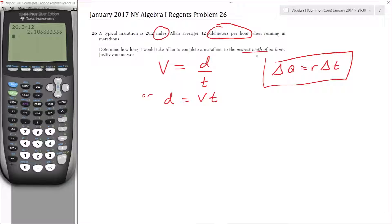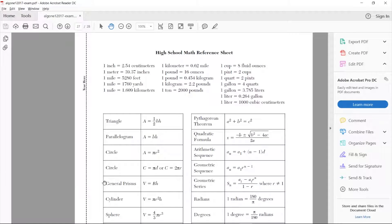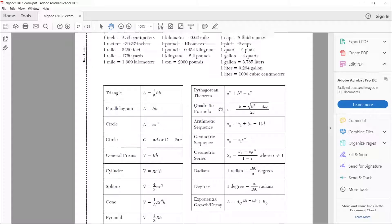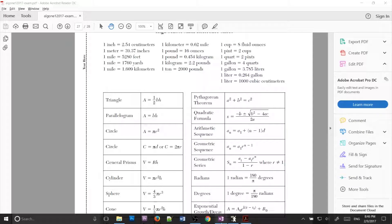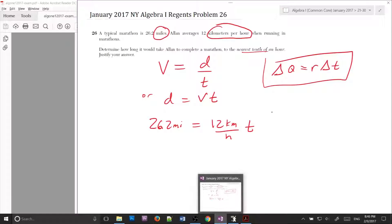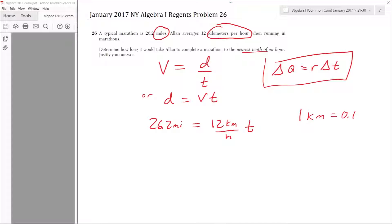So distance equals velocity times time. Let's see if we could do this. We know we need the time. We have the distance and we have the velocity. So 26.2 miles is equal to the velocity, which is 12 kilometers per hour times time. And then the units would then be in hours. But the thing is we need to convert from kilometers to miles. Let's see what we do. We go to our trusty test in the formula section. It's important to get familiar with this formula section. And we do have a conversion between kilometers and miles. One kilometer is 0.62 miles. So 1 kilometer equals 0.62 miles.